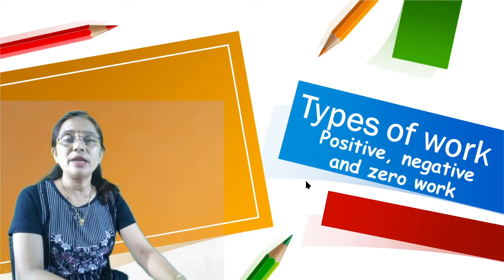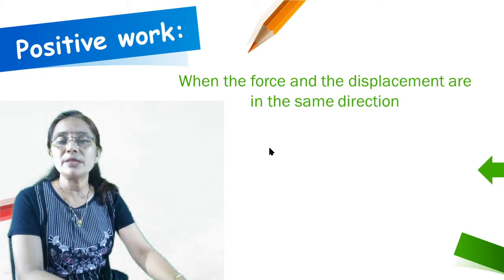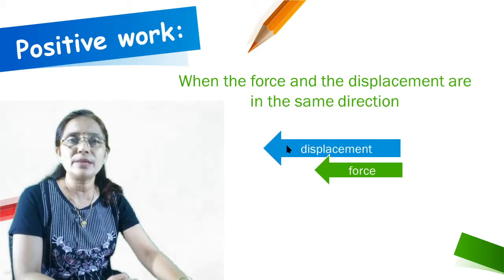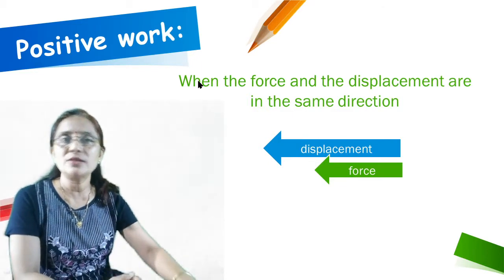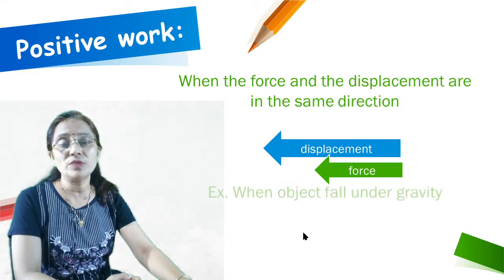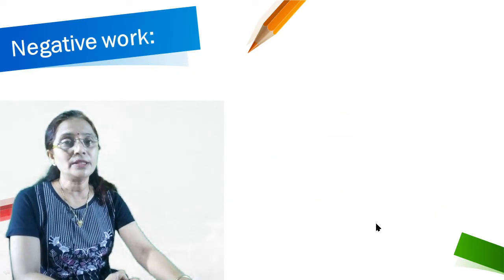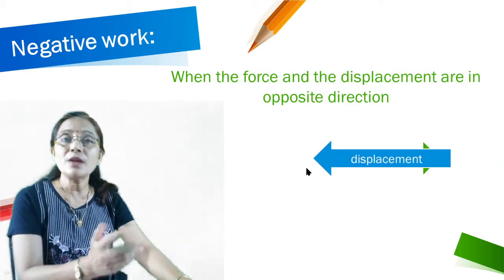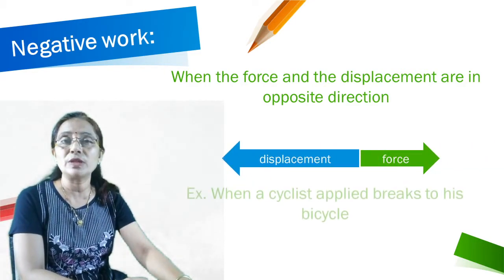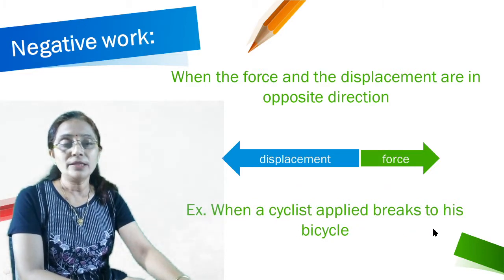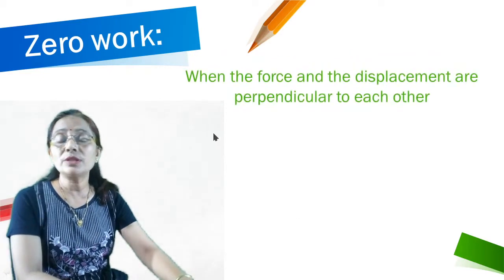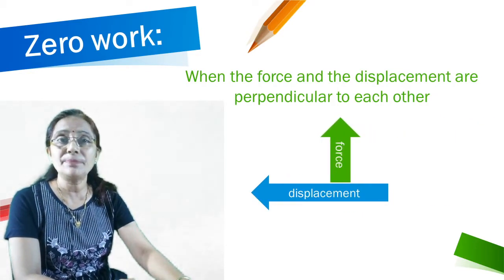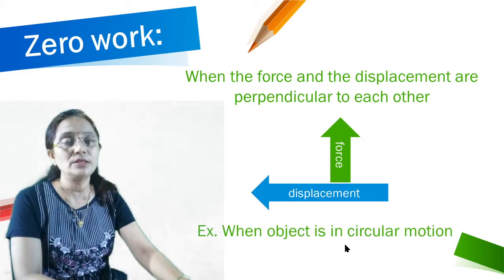Types of work: Positive, Negative, and Zero work. Positive work means when force and displacement are in the same direction. For example, pushing a trolley — the direction of force and displacement are the same. Another example: when an object falls under gravity. Negative work means when force and displacement are in opposite directions. Example: when a cyclist applies brakes to a bicycle. Zero work means when force and displacement are perpendicular to each other. Example: when an object is in circular motion.